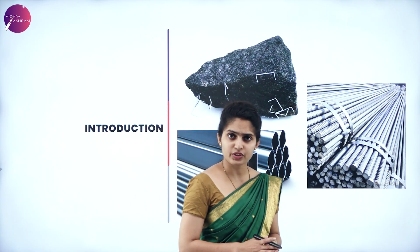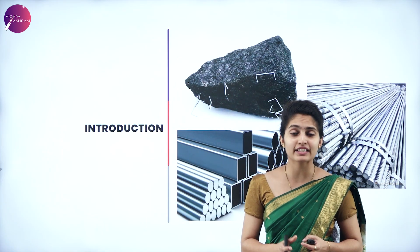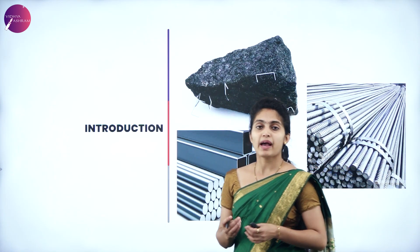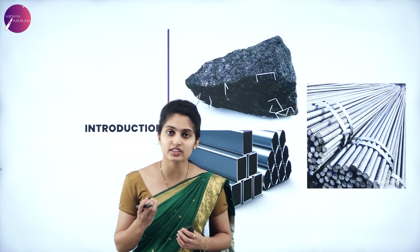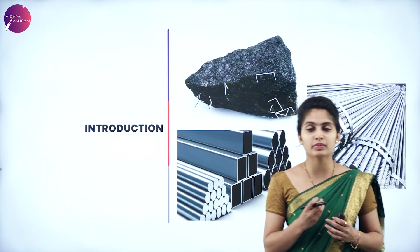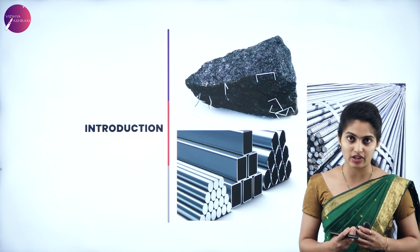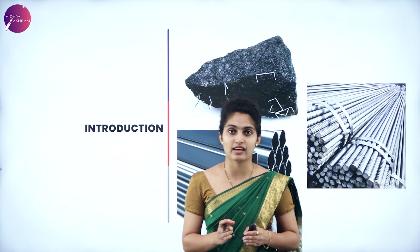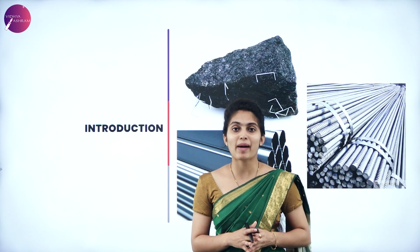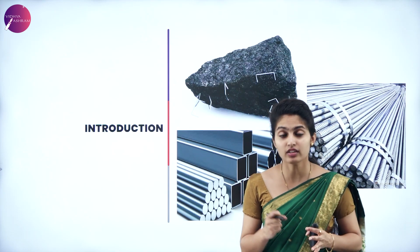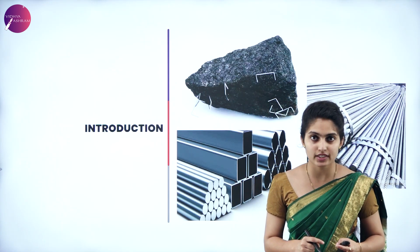Long years ago, the magnet originated in a place called Magnesia in Greece. This place contains a certain kind of ore that used to attract small bits and pieces like iron, steel, etc. Due to the attraction of materials by that ore situated in Magnesia, the ore was called magnetite — meaning the one which attracts other materials.